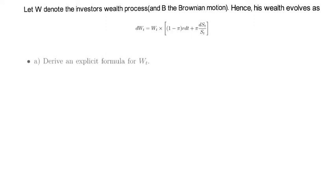Now task A. Derive an explicit formula for Wt. Here is the hint. The wealth process will also follow a geometric Brownian motion.